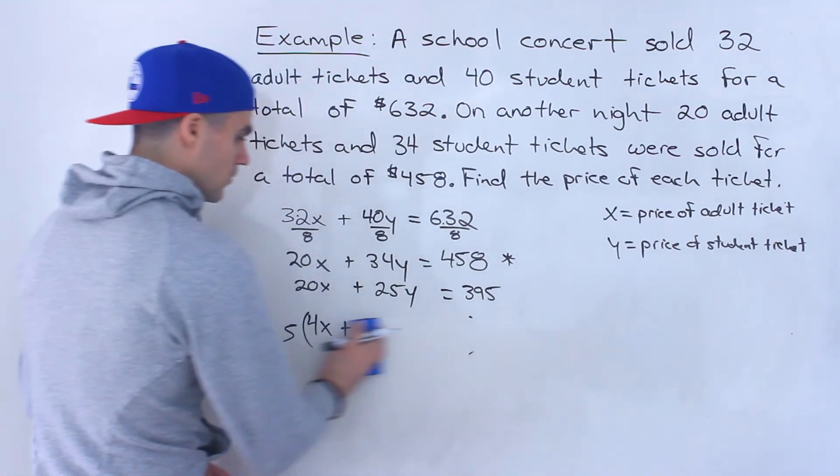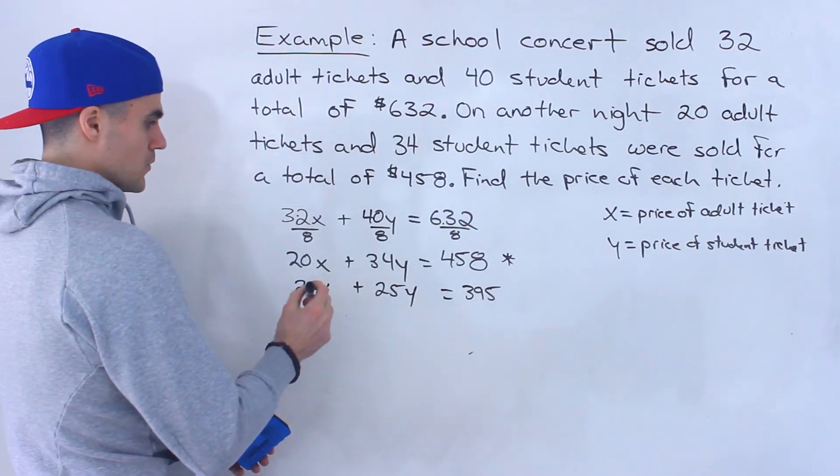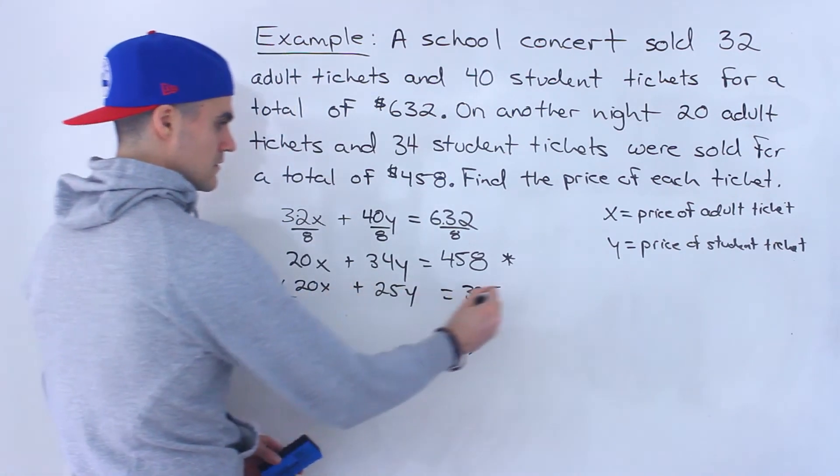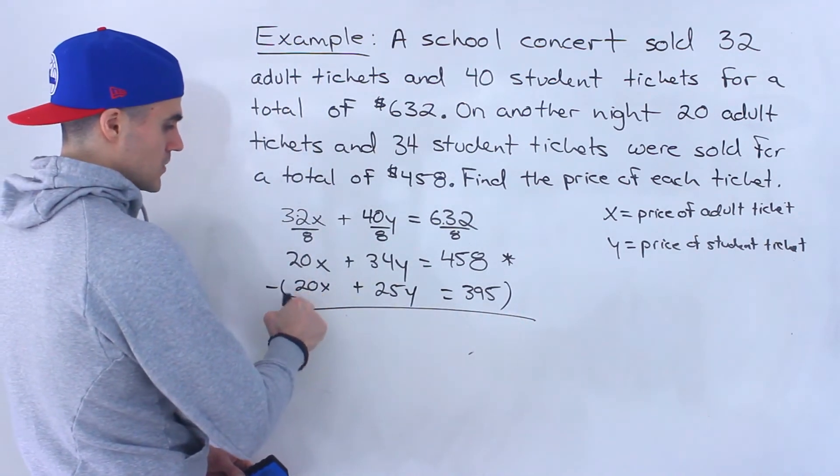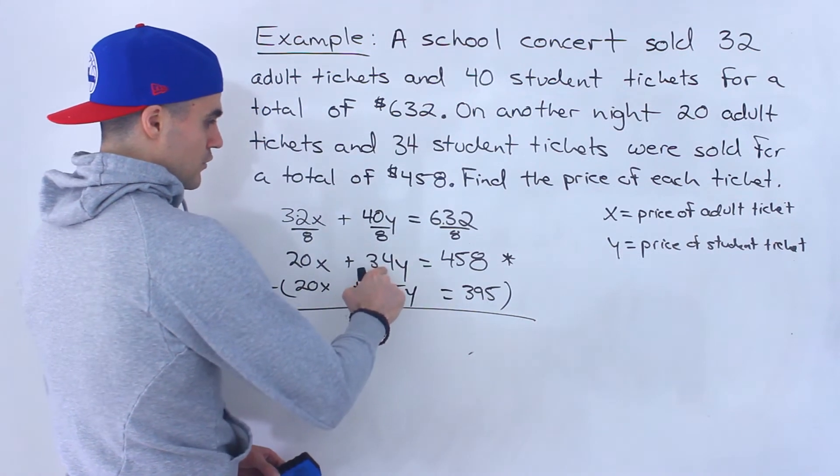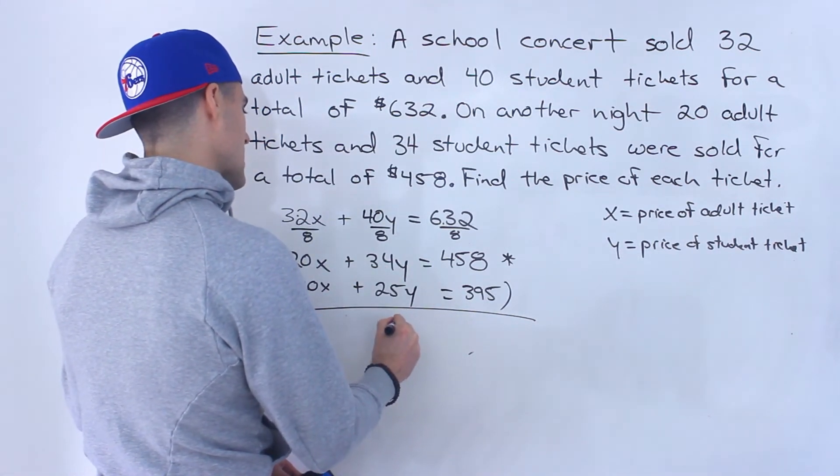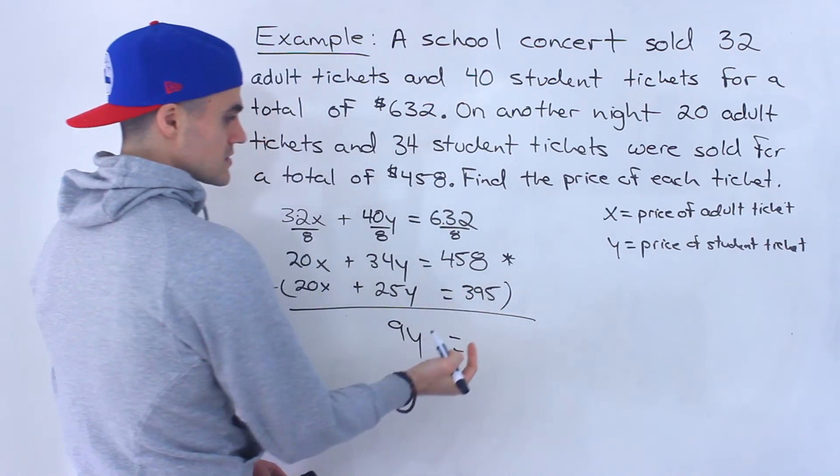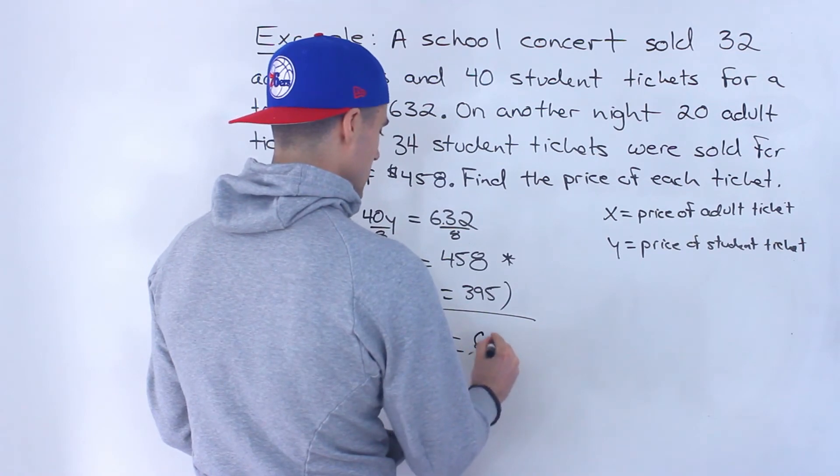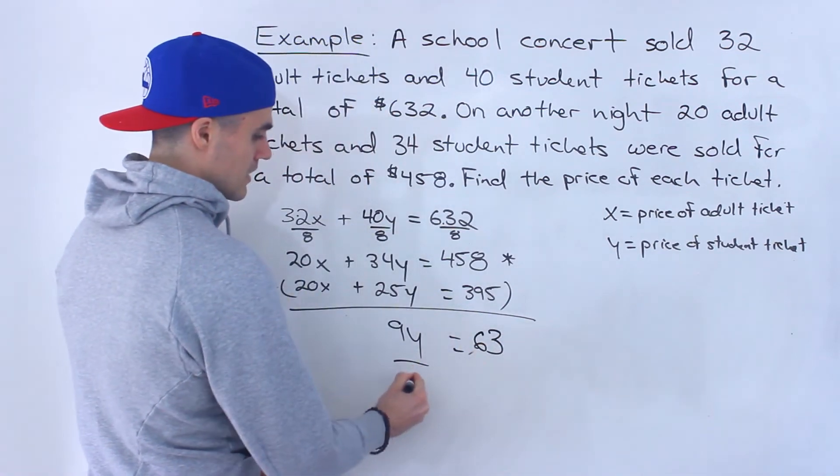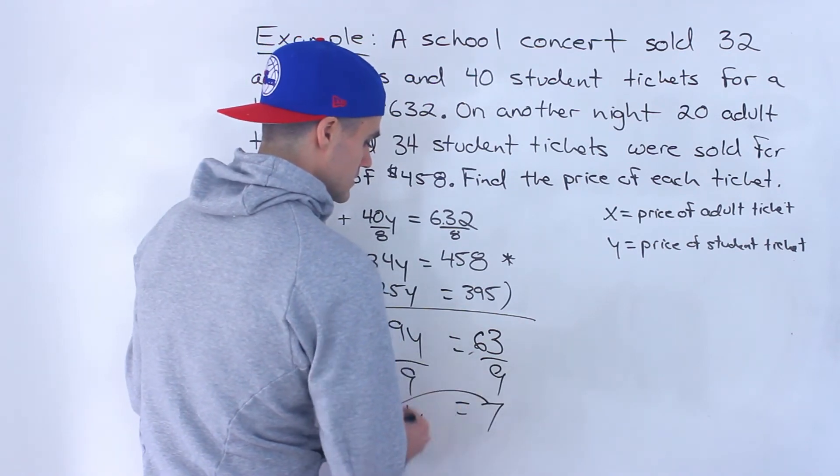And so now, what we could do is we can subtract these. The 20X's are going to go away. So 20X minus 20X is 0. 34Y minus 25Y would give us 9Y. And then 458 minus 395 would give us 63. And then notice now we could divide by 9. Y is 7.